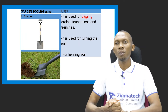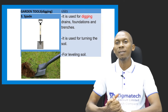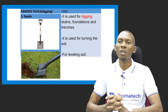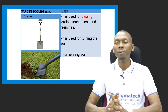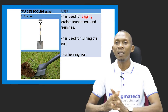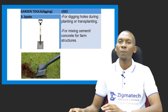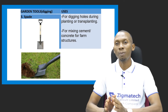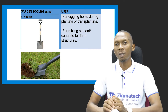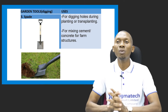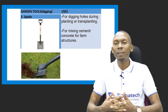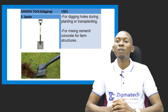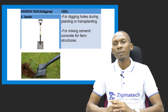We have the spade as another garden tool, which is used for digging drains, laying foundations and trenches on the farm. It can also be used for turning the soil, which is a tillage activity, and for leveling the soil. It can be used for digging holes for planting or transplanting from the nursery to the main field, and also for mixing cement or concrete when building farm structures.